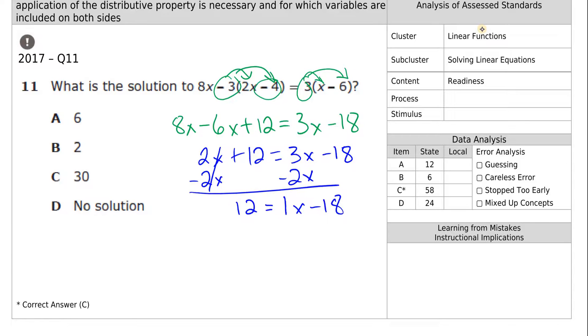The only thing left on this side is 12 equals 3 minus 2 is 1x, or just x, minus 18. We need to get the x on its own, get rid of this 18, which is currently subtracting, so we get rid of it by adding 18 on both sides. 12 plus 18 is 30 is equal to 1x, or just x, so the answer is C.